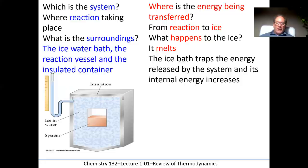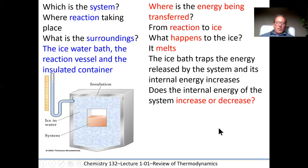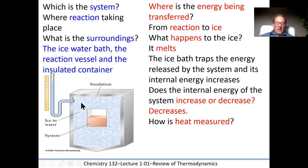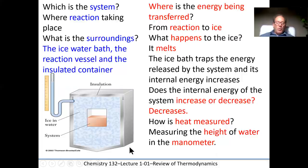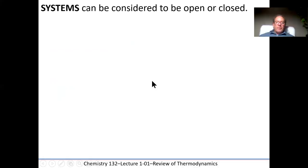The ice bath traps the energy released by the system and its internal energy increases. If it was an exothermic process, the system would be releasing heat energy used to melt the ice, so the internal energy of the system must be decreasing. Heat is measured by looking at how much water has flowed in to take the place of the melted ice — we measure the height of this water column change over time. That's one ingenious way to measure energy changes inside a system.